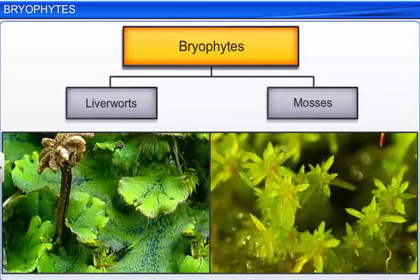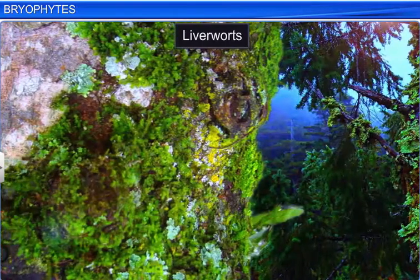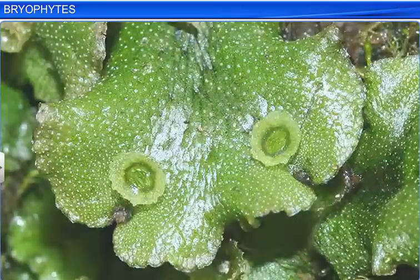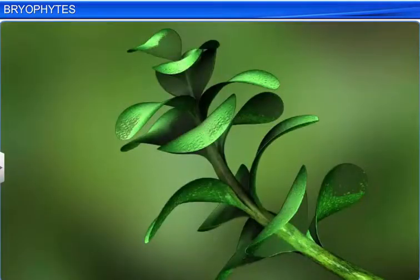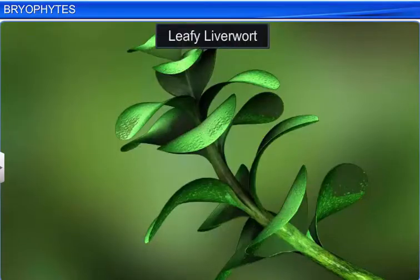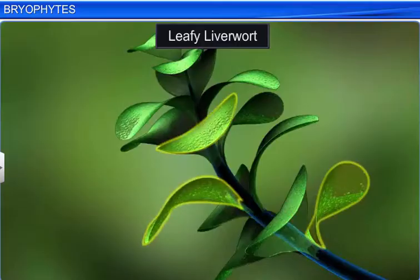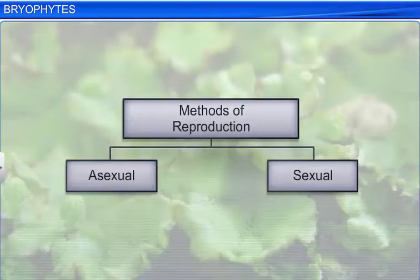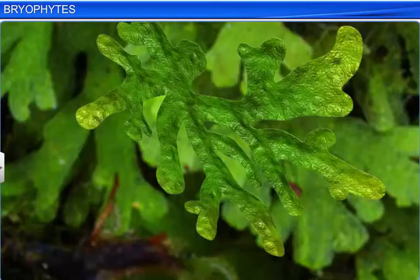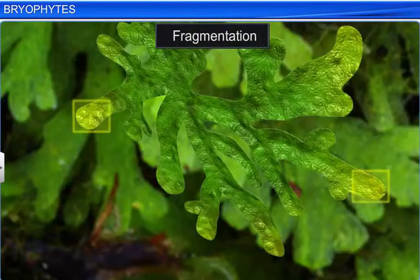Bryophytes are of two types: liverworts and mosses. You can find liverworts in moist and shady environments, such as barks of trees. The plant body, a thallus, is dorsiventral and appressed to the substrate. However, in the case of leafy liverworts, the plant body bears tiny leaf-like appendages in two rows on the stem-like structures. Liverworts reproduce both asexually and sexually. In the case of asexual reproduction, we observe fragmentation of the thallus.